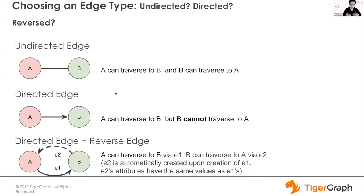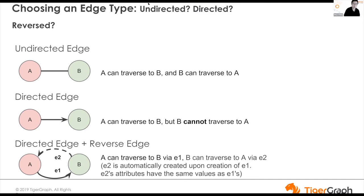Let's start with schema definition best practices. One of the most frequently asked questions is about edge types — we have different options. We have undirected edges and directed edges. For undirected edges, traversal goes between two vertices in both directions — you can go from A to B and B to A. Under the hood, the edge is stored twice, once for A and once for B. For directed edges, the edge is only stored for its originating vertex, so if we have an edge from A to B, it is only stored for A.